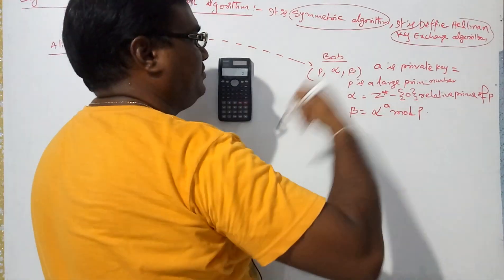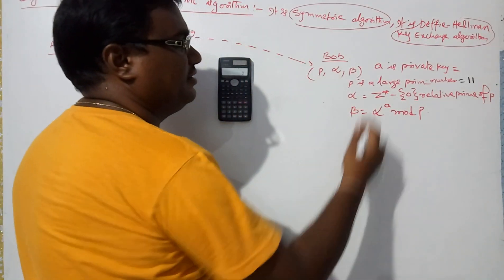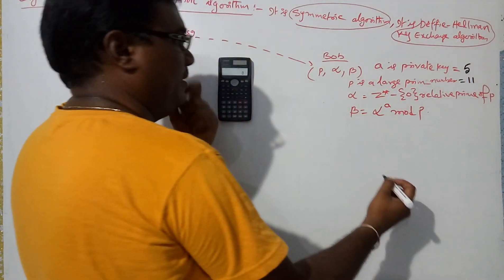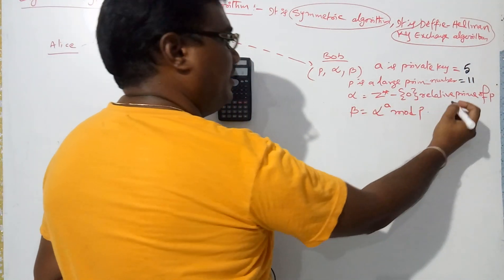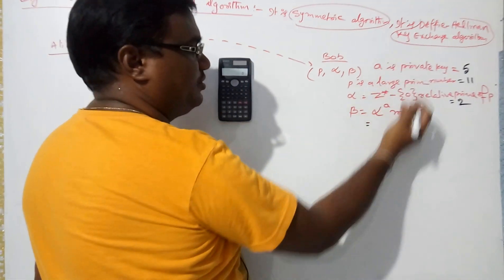p is a large prime number; I am assuming 11. a is a private key; I am assuming 5. Alpha I am assuming 2. I am assuming these values.